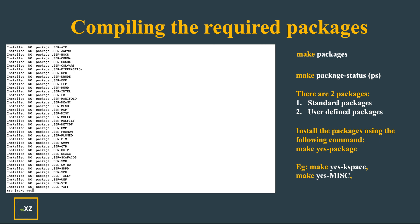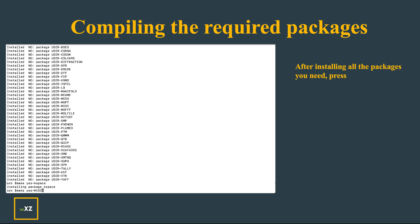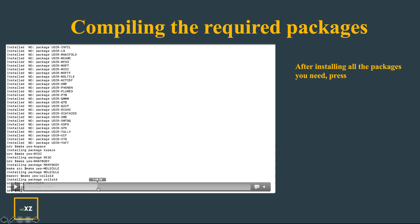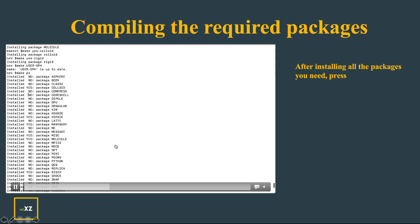I use the make yes-package command to install packages one at a time. I press make yes-kspace to install kspace, make yes-misc to install misc, make yes-manybody to install manybody, make yes-molecule to install molecule, make yes-colloid to install colloid, and make yes-rigid. Now I press make ps and I can see that certain packages have been installed.